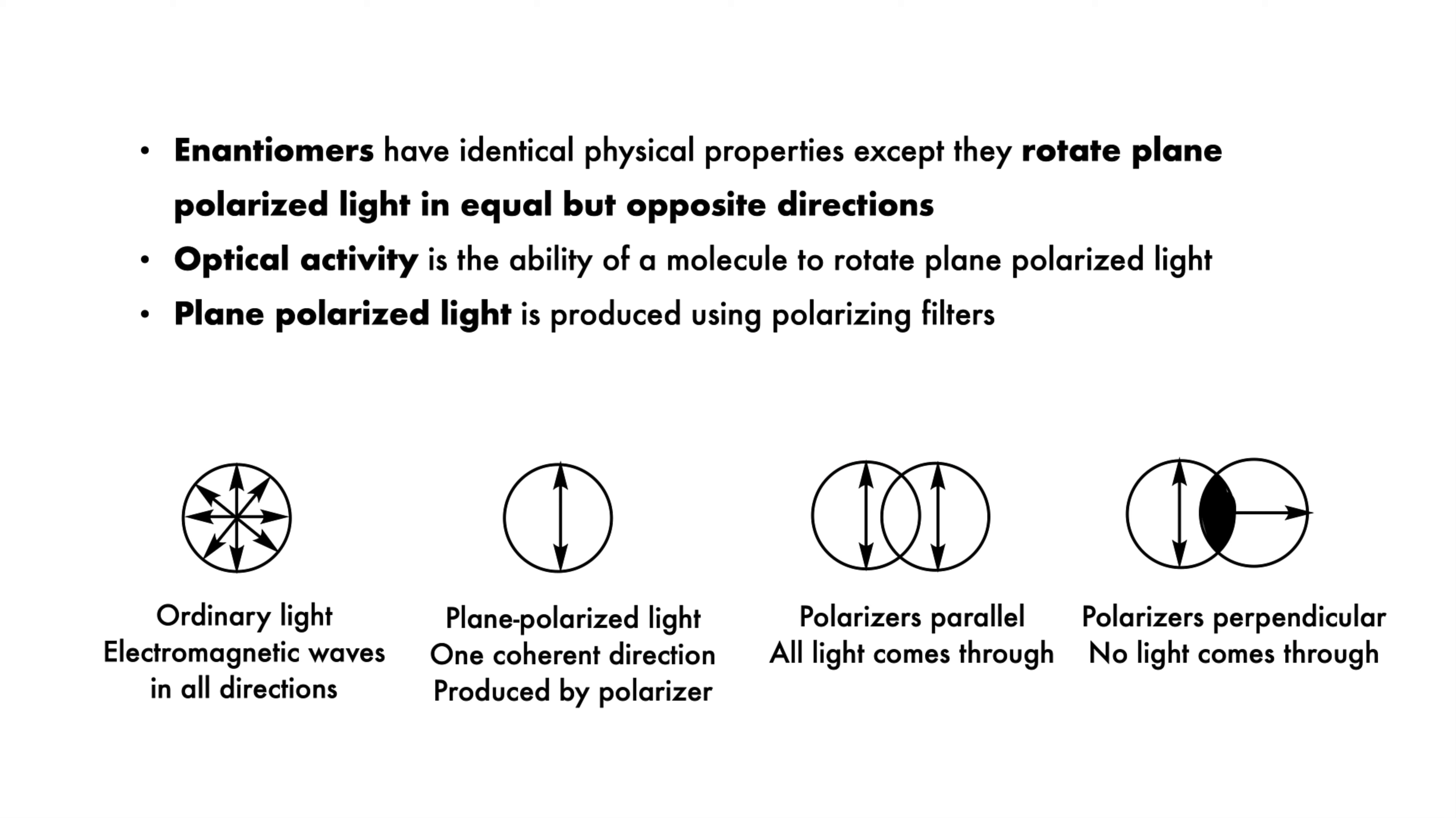As we talked about in Section 5.1, enantiomers have identical physical properties, except that they rotate plane-polarized light in equal but opposite directions.